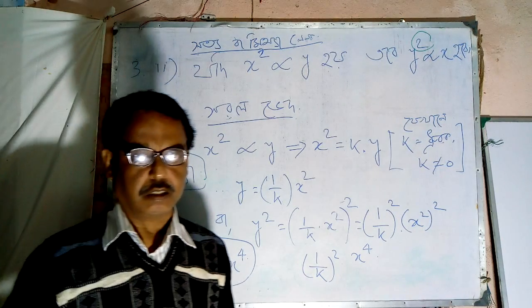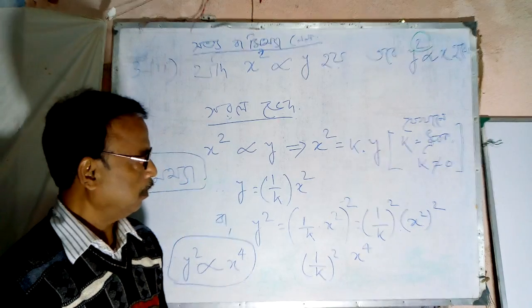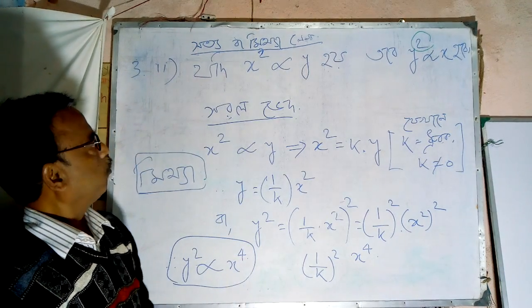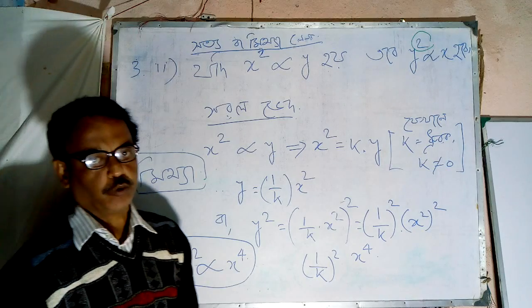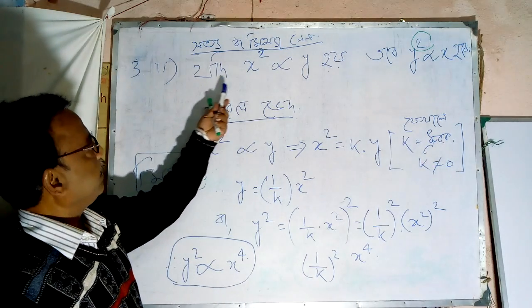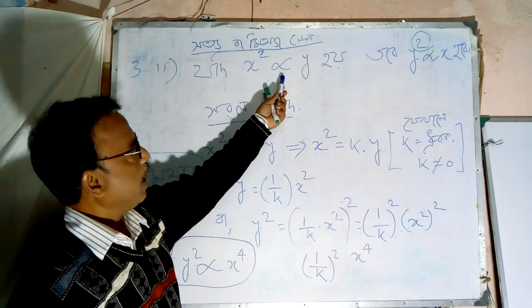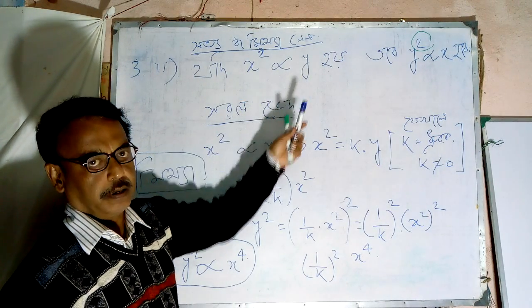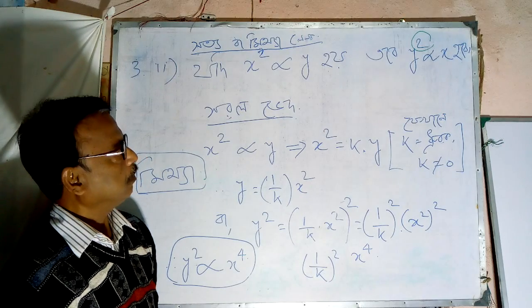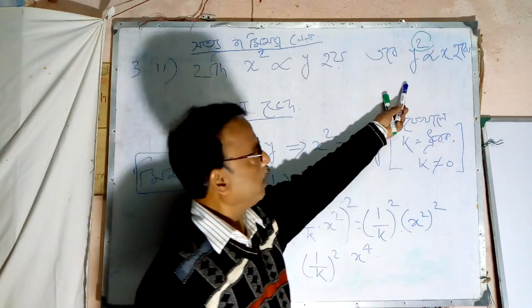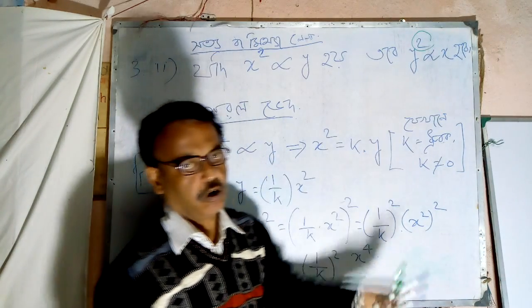Hello friends, let us start my next problem. We are going to write 3 x squared varies as x squared, varies as y squared, varies as x forming.